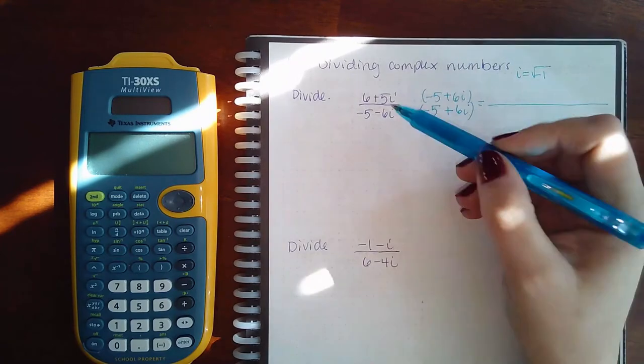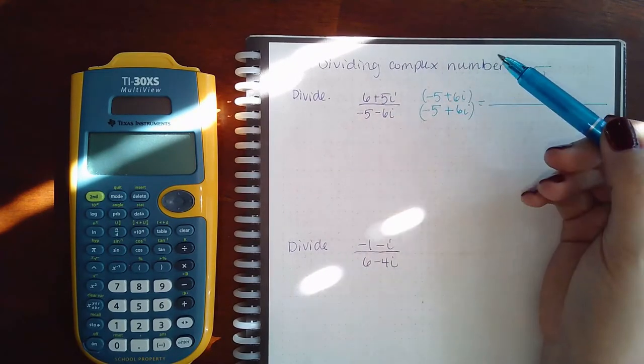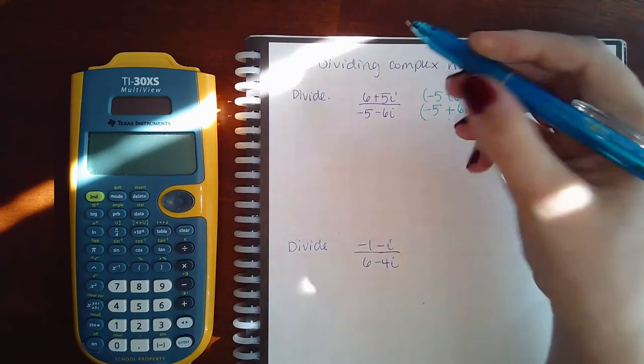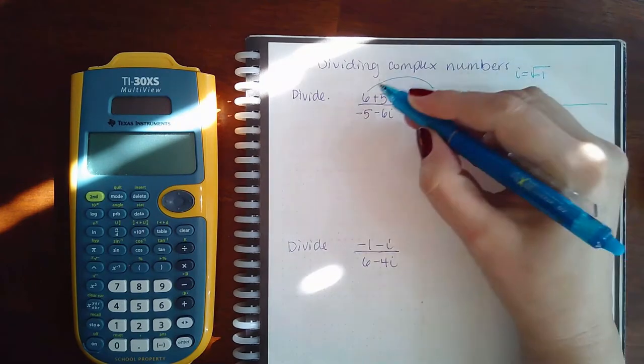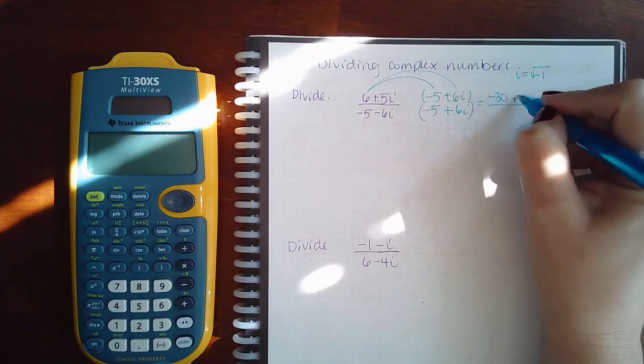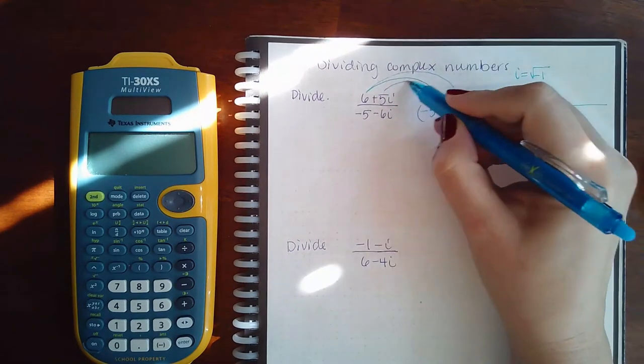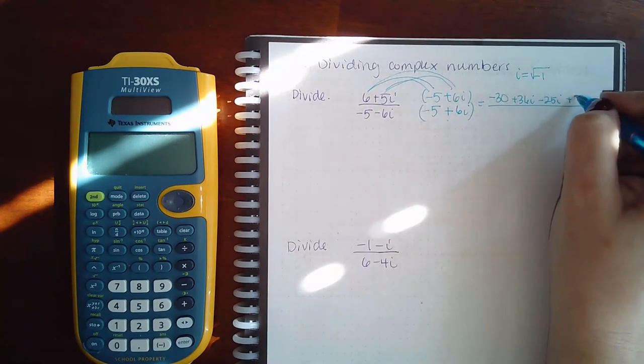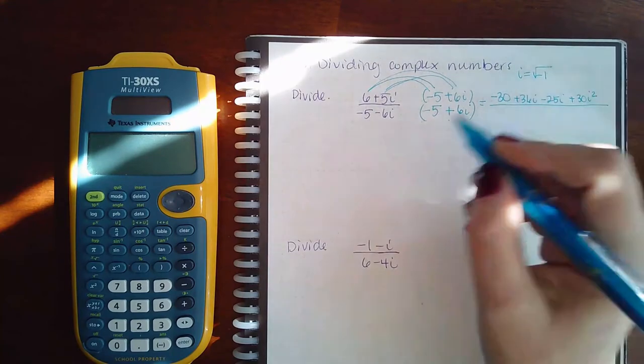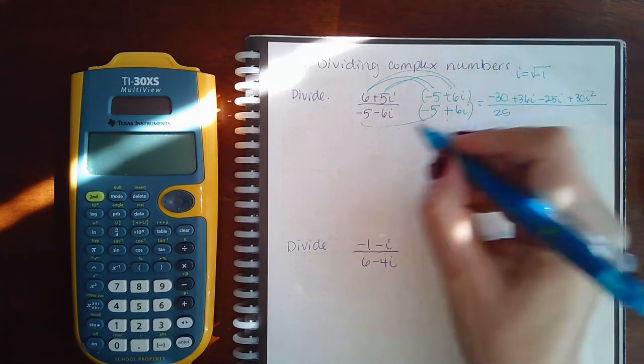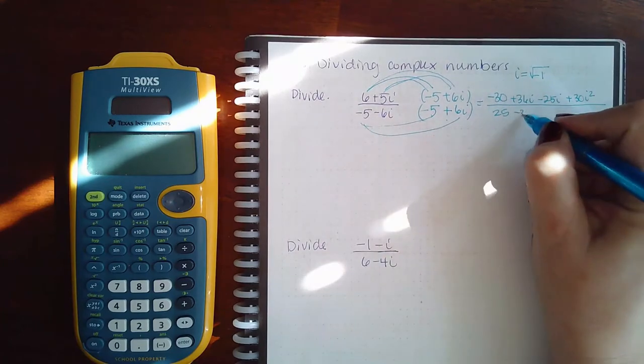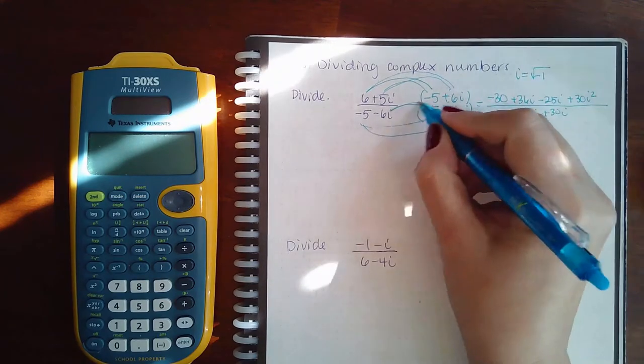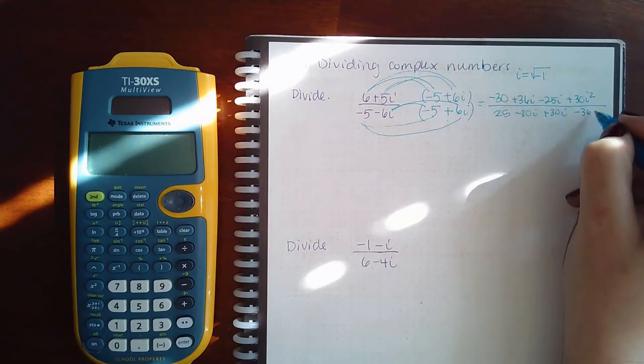And so then now we have a binomial times a binomial, which means we have to FOIL, and a binomial times a binomial, which means we have to FOIL. So let's go for it. We get negative 30, positive 36i, negative 25i, and positive 30i squared. Here we get positive 25, negative 30i, positive 30i, and negative 36i squared.